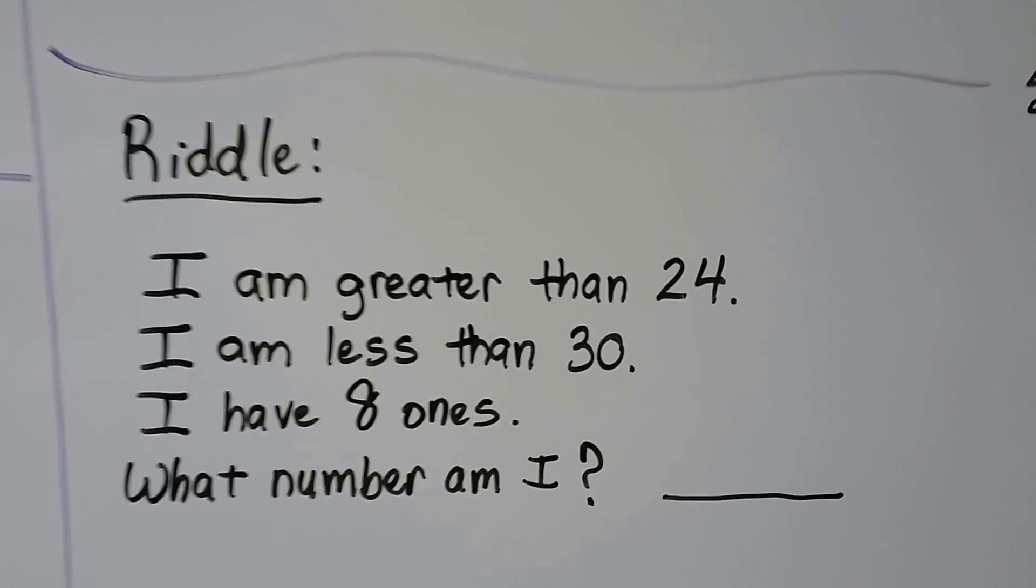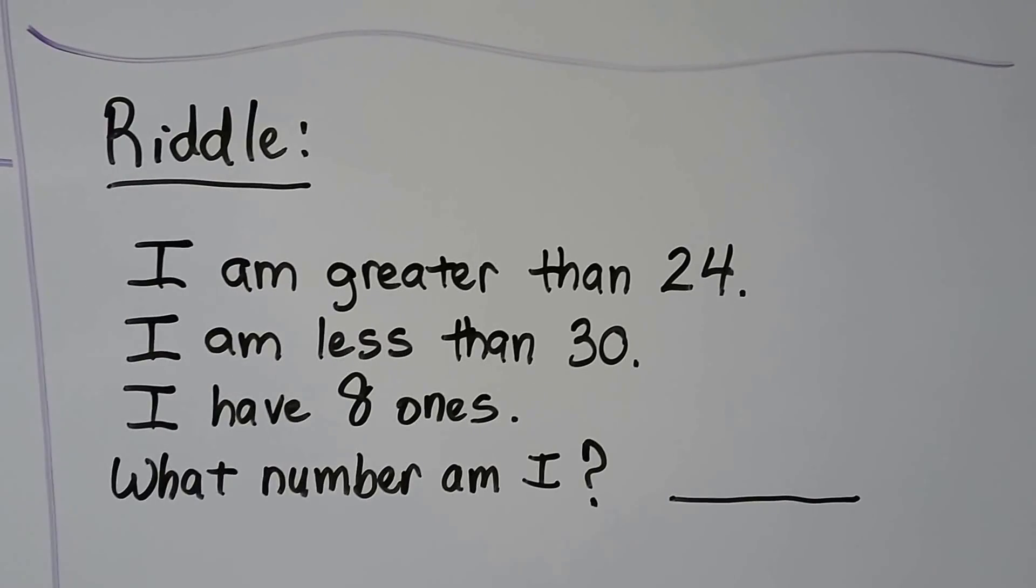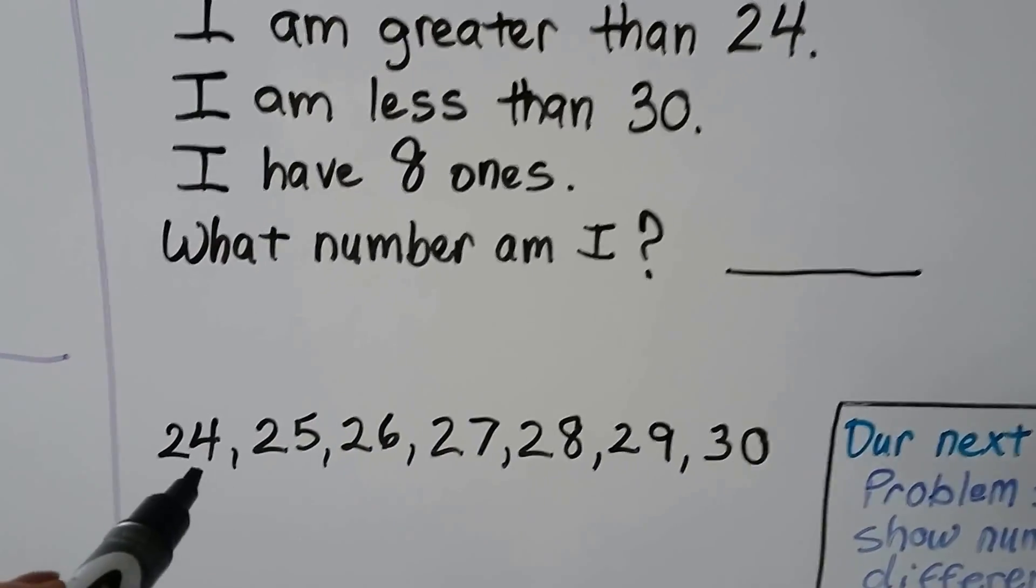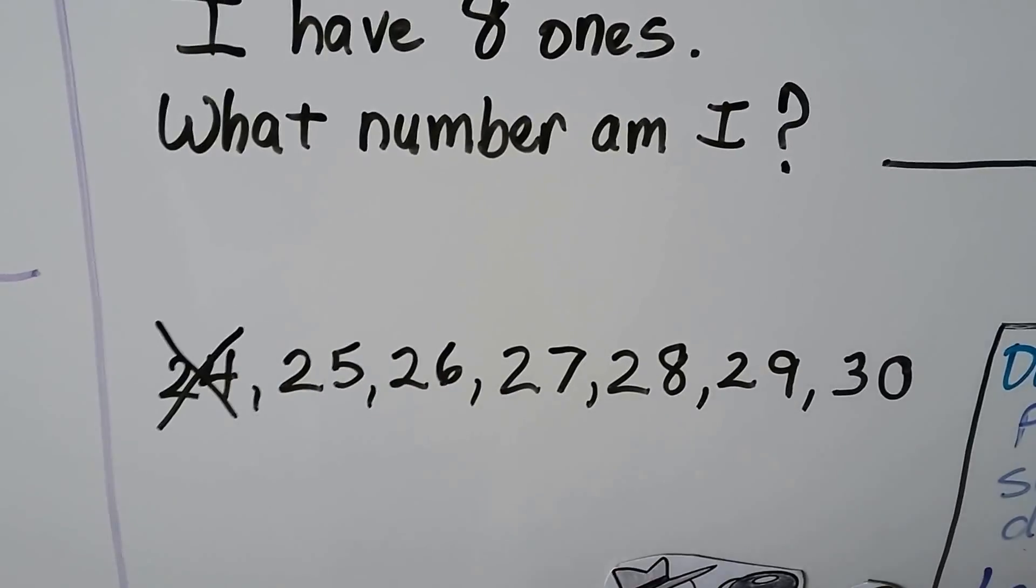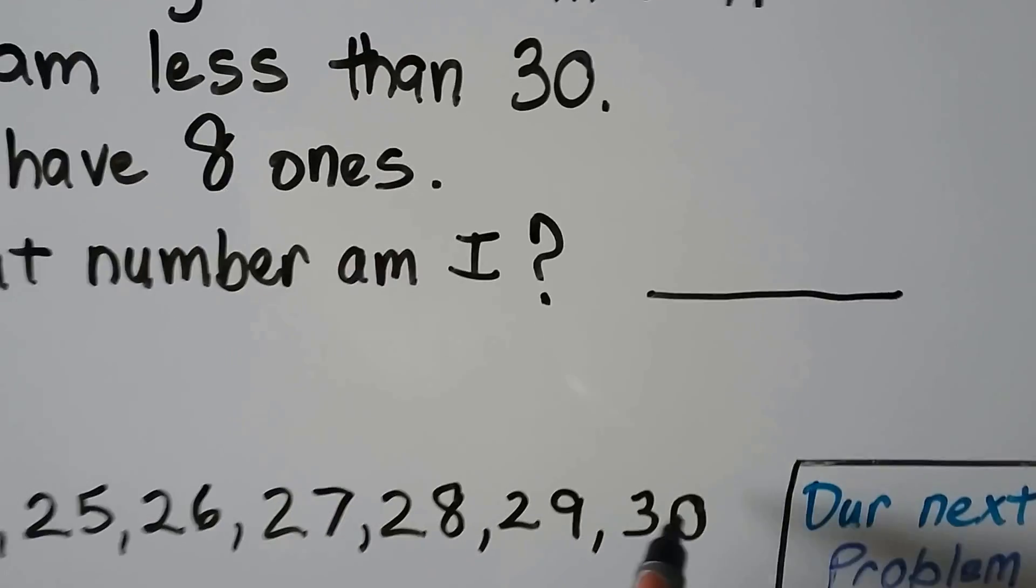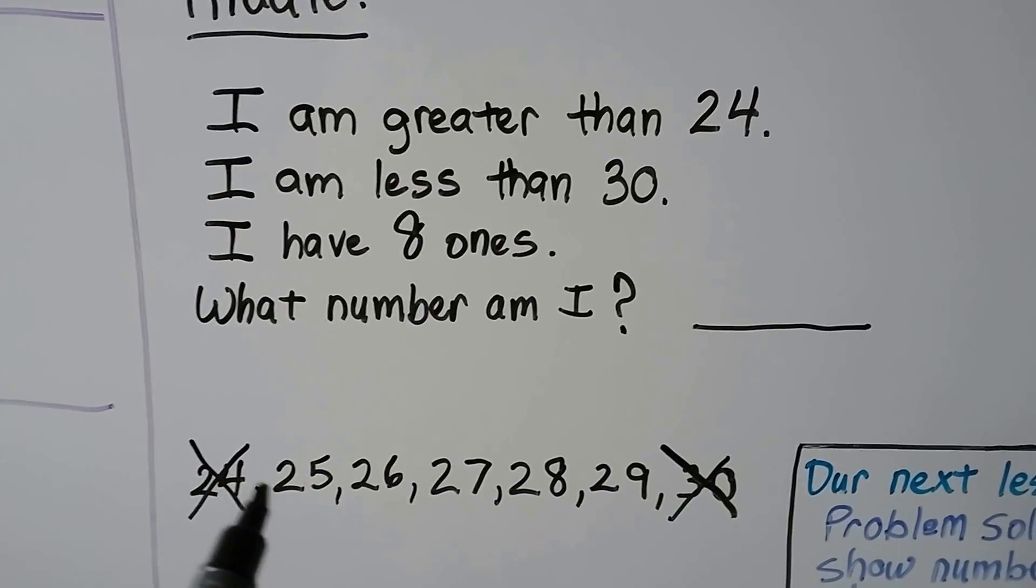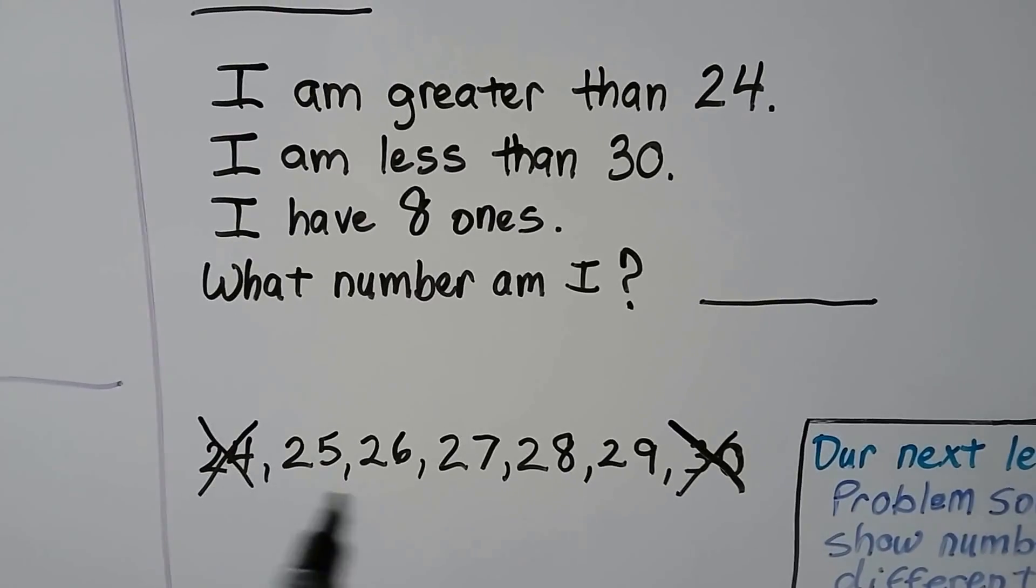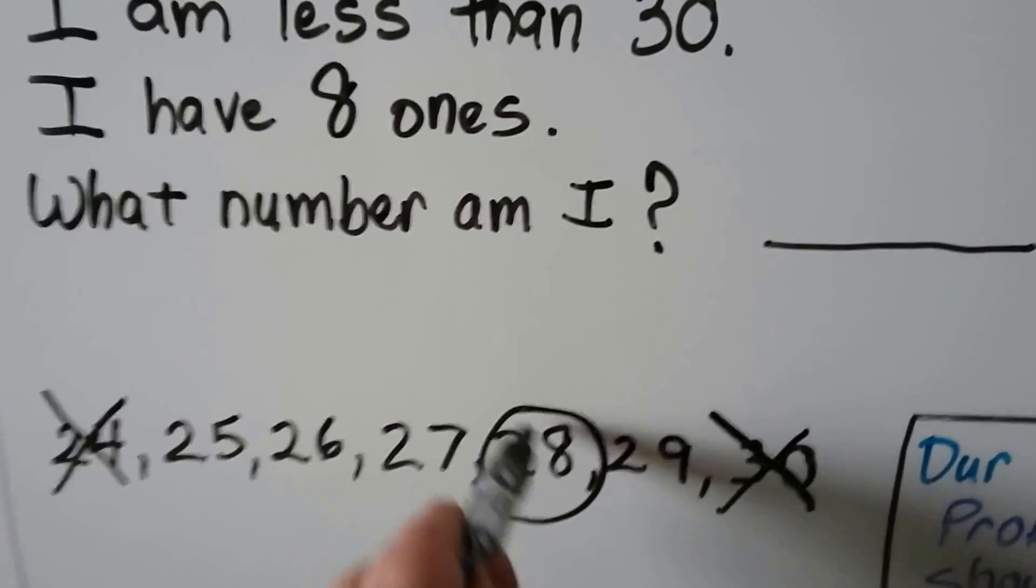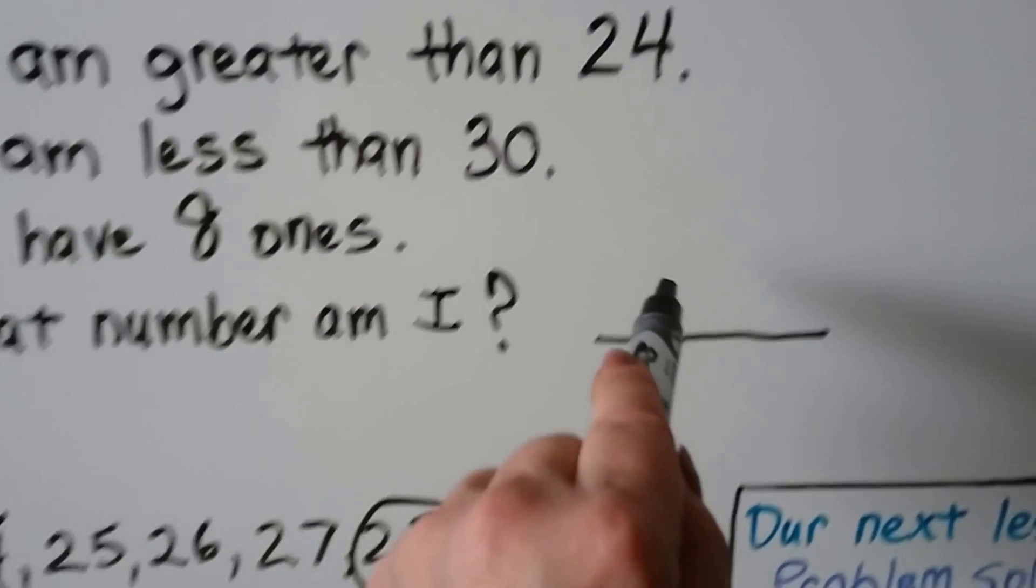Here we have a riddle. I am greater than 24. I am less than 30. I have 8 ones. What number am I? We could write the numbers to help us figure this out. It's greater than 24, so it's bigger than 24 and 24 is not included. I am less than 30, so it can't be 30. It has to be less than 30, so 30 can't be included. I have 8 ones. Well, here are the numbers in between 24 and 30. Can you see the one that has 8 ones, 8 in the ones place? If you said 28, you're right. It's greater than 24, it's less than 30, and it has 8 ones. The number was 28.